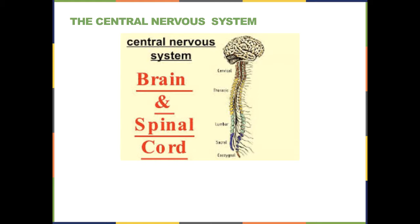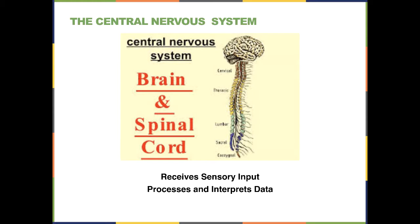Today we're going to talk about the central nervous system and then spend a little time at the end talking about some of the senses that we use. The purpose of the central nervous system is threefold. First, it receives sensory input from the outside. Second, it processes and interprets the sensory input data, as well as data regarding the internal milieu, and then it responds to all this information after it integrates and interprets it all together.